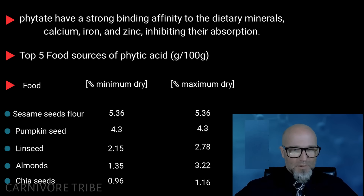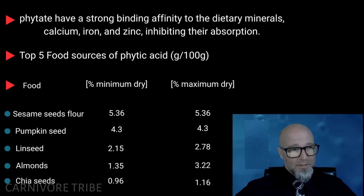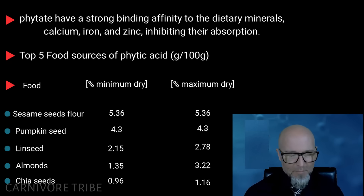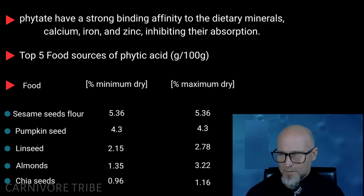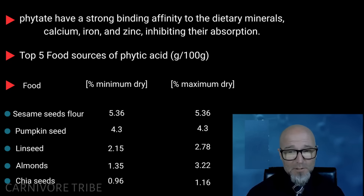The top food sources that contain phytate include sesame seeds, pumpkin seeds, linseeds, almonds, and chia seeds. If you want to avoid most of the phytate in your diet, there is a list of the top offenders in terms of phytate content. Not eating seeds would be a good start, and keeping your plant material intake as close to zero as you can possibly get it. That's the discussion on phytate — hope it was useful.